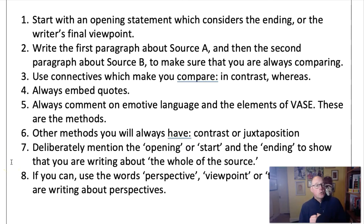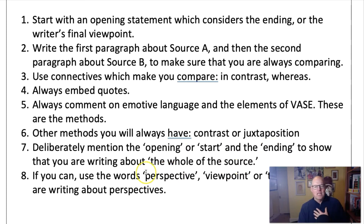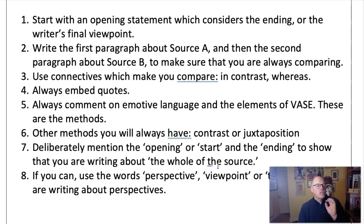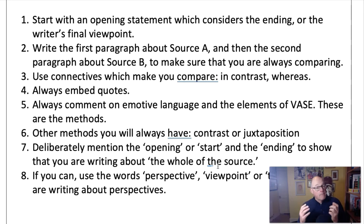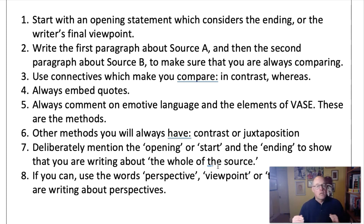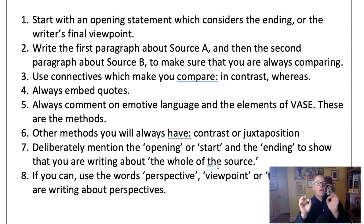Number seven is a really cool hack. How do you persuade the examiner that you've written about the whole of the source? Well, you deliberately mention the opening or the ending to prove to them that you're thinking about the whole of the source, and you write the phrase 'the whole of the source' if you want. Notice that writers don't name the middle — that's a top clue that writing about the beginning and the ending is much more important. So if you're pressed for time, write about the endings at the beginning, write about the beginnings later on, and then contrast that to the endings. If you have time include the middle, but if you don't, you will already have proven that you can write a brilliant comparison analysing the whole text.